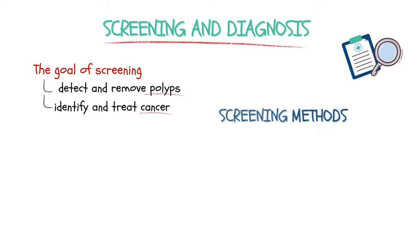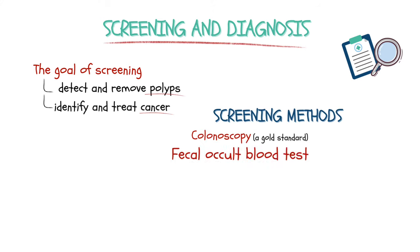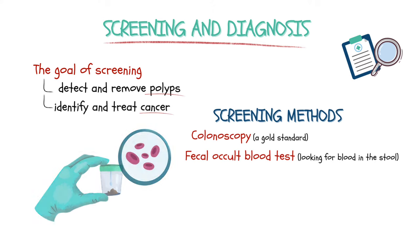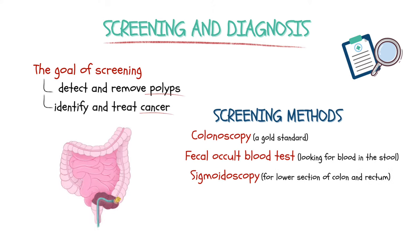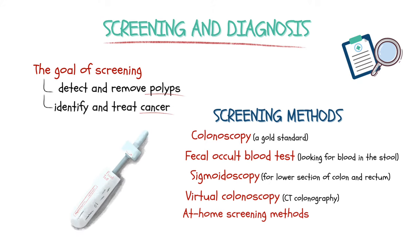Colorectal cancer screening methods include colonoscopy — the gold standard — fecal occult blood test (looking for blood in the stool), sigmoidoscopy for the lower section of colon and rectum, virtual colonoscopy (CT colonography), and at-home screening methods such as the fecal immunochemical test (FIT) and stool DNA test.